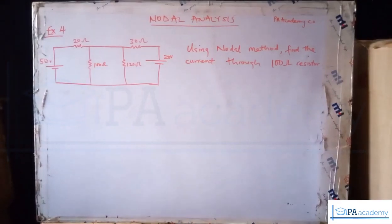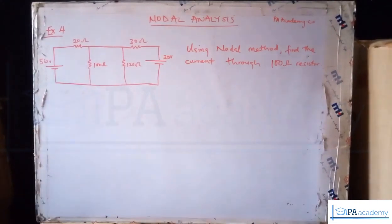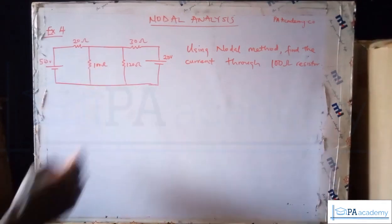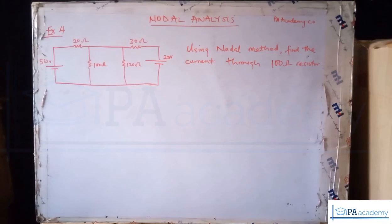Hello and welcome back to PE Academy. This is Example 4 and we are still looking at nodal analysis. The question says: using nodal method, find the current through the 100 ohm resistor. As I mentioned in previous examples, questions like these can be solved using different methods, so the question can ask you specifically to use a particular one.